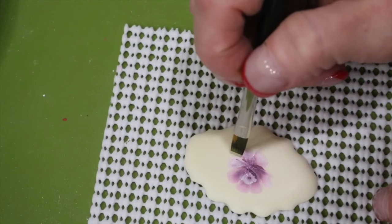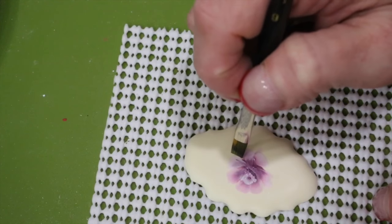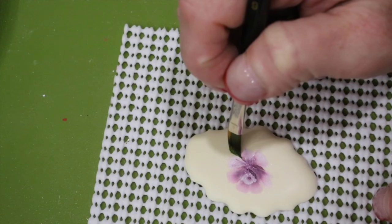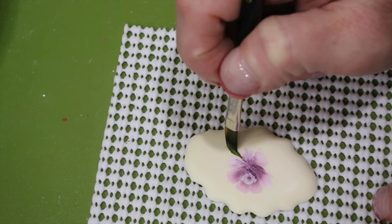Now with the square number four brush with half gooseberry and half moth green, paint in a few leaves.